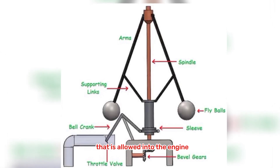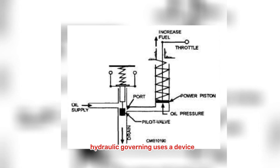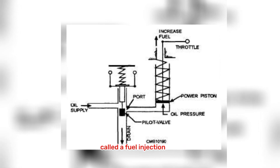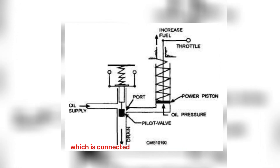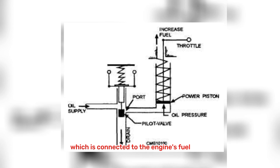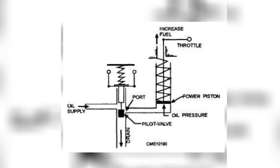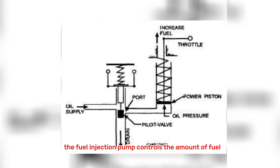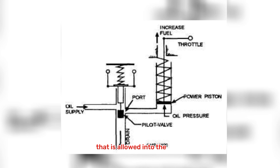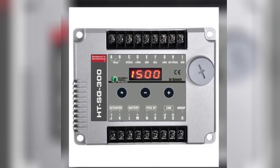Hydraulic governing uses a device called a fuel injection pump, which is connected to the engine's fuel system. The fuel injection pump controls the amount of fuel that is allowed into the engine, which in turn controls the engine's speed.